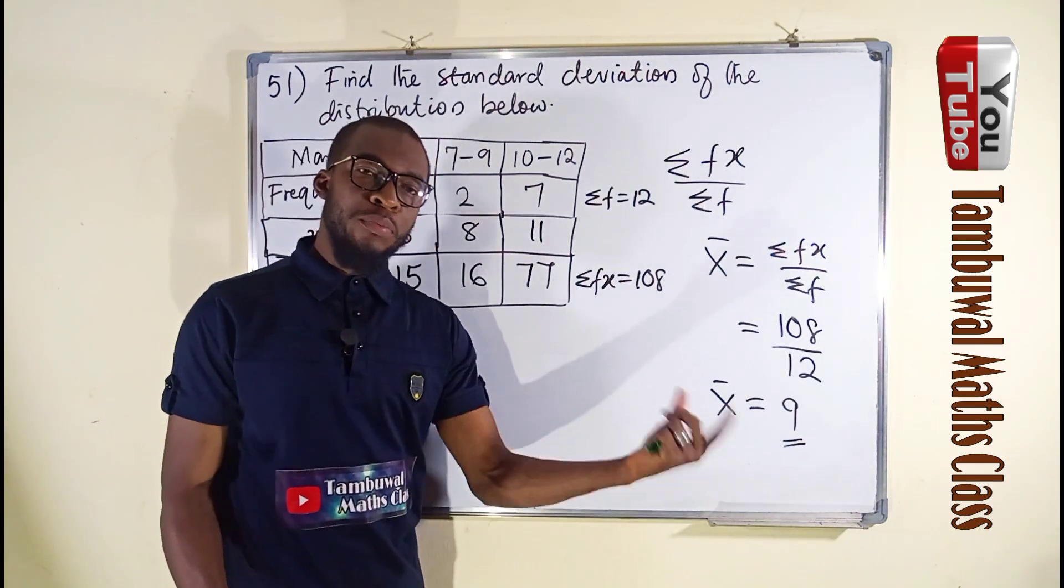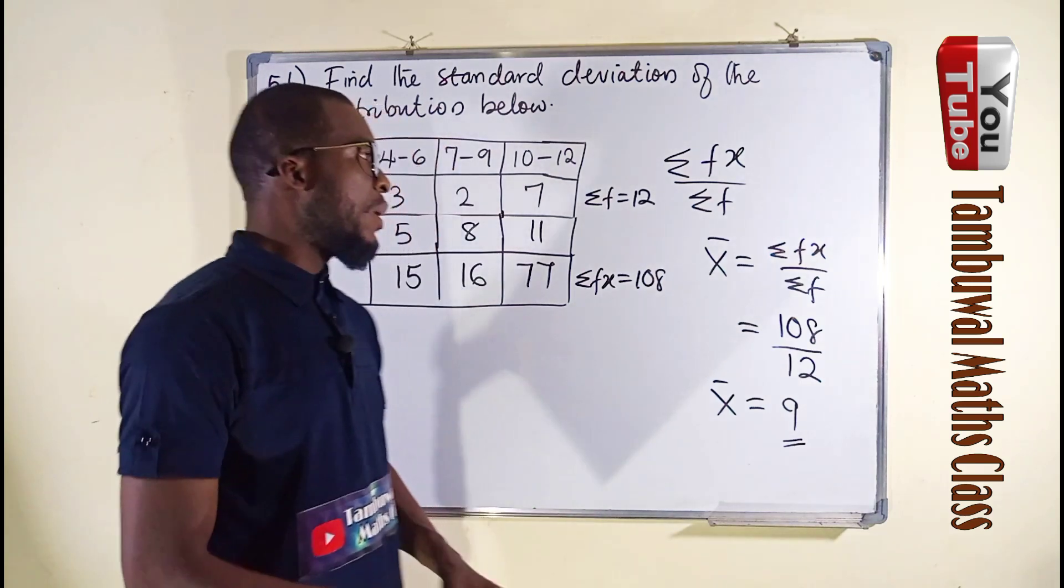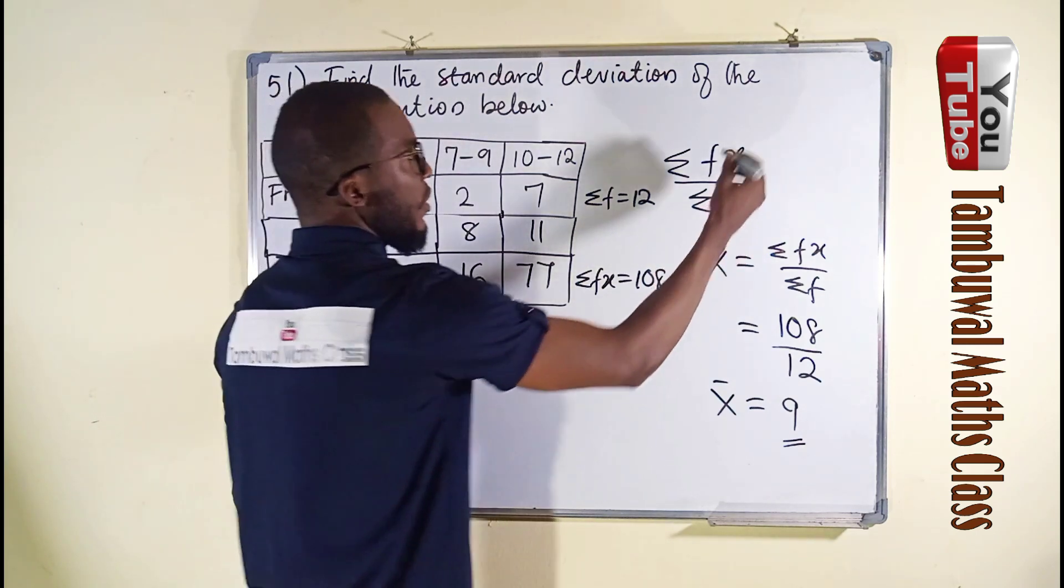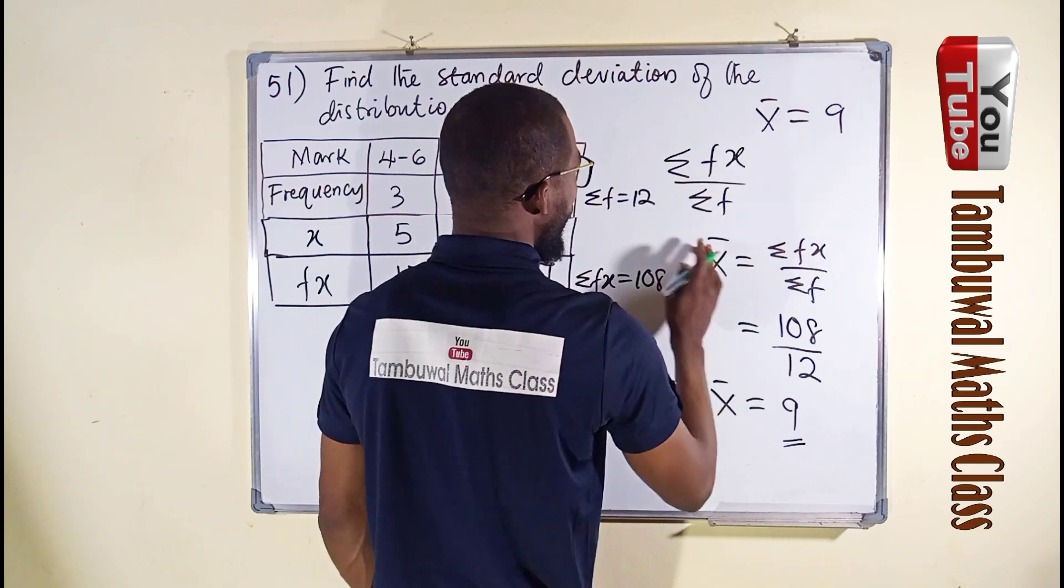This is our mean, but mean is not what we are asked to find. We are asked to find the standard deviation. Now let us record our x bar to the other side. We can write it here, x bar equals 9 because we are going to use it.